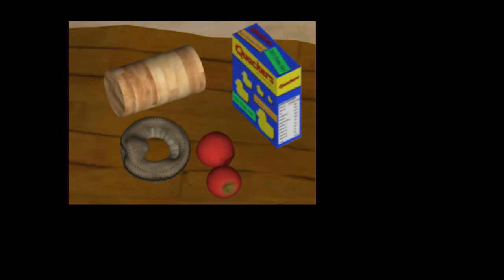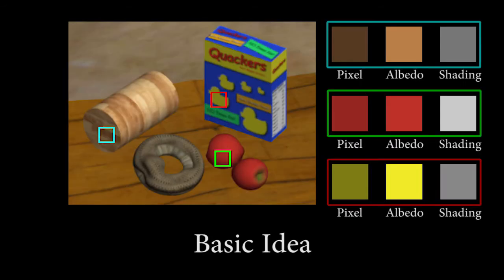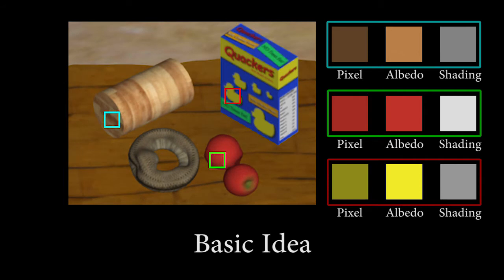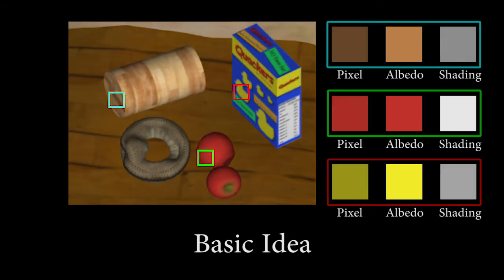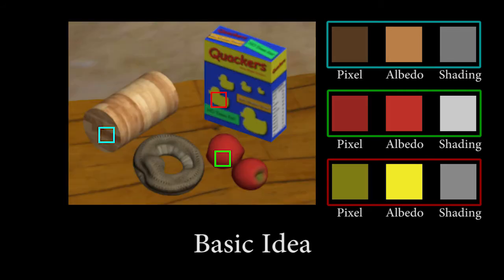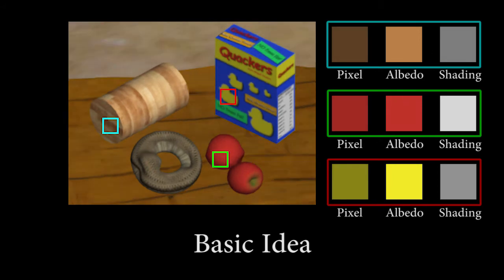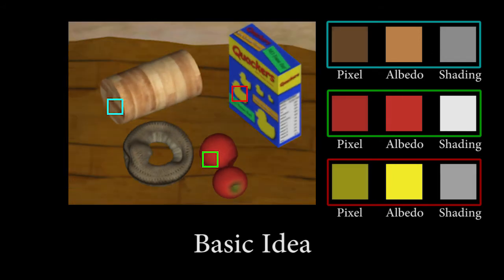Here, we see a synthetic sequence with changing illumination. The boxes in the video illustrate what is happening in individual pixels. On the right, we see how the pixel values change over time. Note that the corresponding albedo is constant, and that the shading value changes slowly.